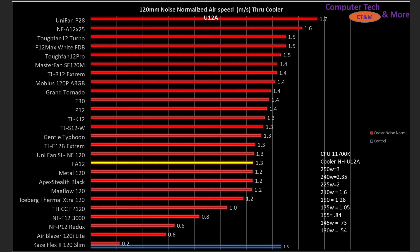How does it compare against other fans I've tested? The FA12 is towards the bottom — it's not a terrible result at 1.3 meters per second. Over here we have performance at a specific air speed through my specific cooler with my specific CPU, the 11700K. The cooler is the Noctua U12A. I did a bunch of testing to find what equivalent air speeds through the cooler equate to what approximate wattage — those wattages are accurate within about 5 watts on each side. At 1.3, that's 190 watts CPU with that cooler on that CPU. So that's not a bad result.